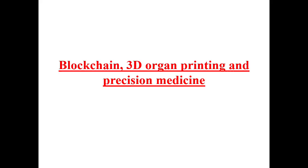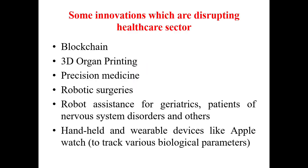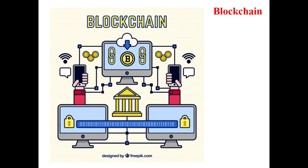Moving on to the second topic — Blockchain, 3D Organ Printing, and Precision Medicine. Some innovations disrupting healthcare sectors are blockchain, 3D organ printing, precision medicine, robotic surgeries, and robot assistance for geriatrics and patients with nervous system disorders. Handheld and wearable devices like the Apple Watch are also used to track various biological parameters. As the image indicates, blockchain involves the blocking of transactions — what a transaction, called a block, means will be explained in the next section.